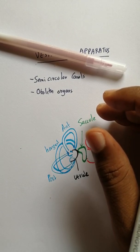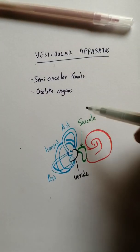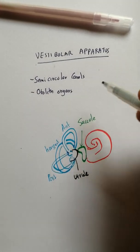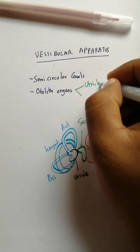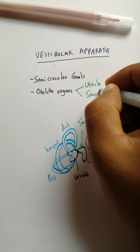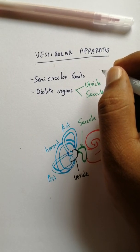So these are the components of the vestibular apparatus: the semicircular canals and the otolith organs. The otolith organs are the utricle and saccule.